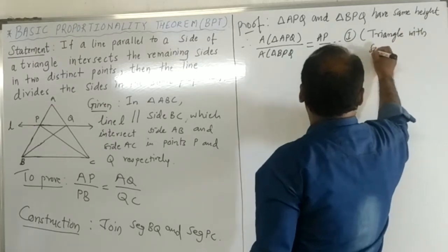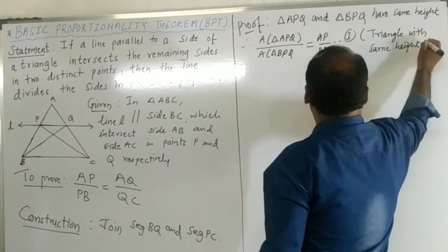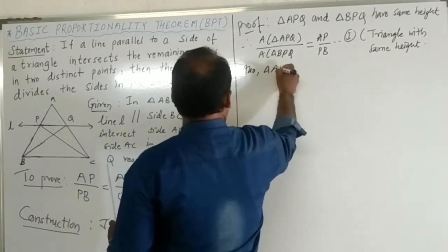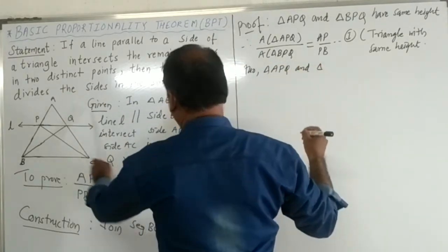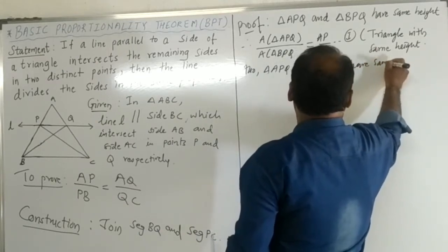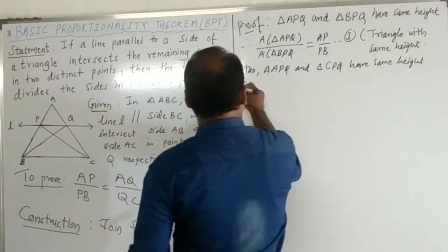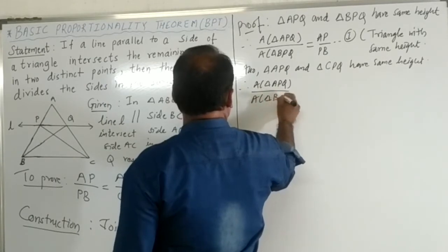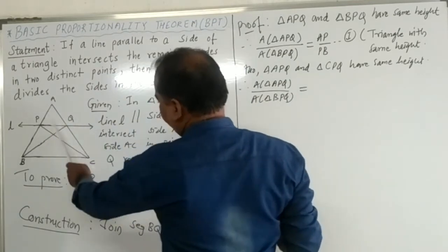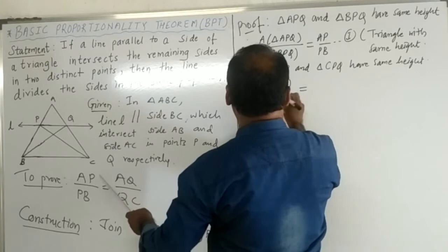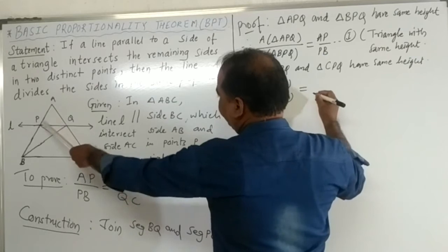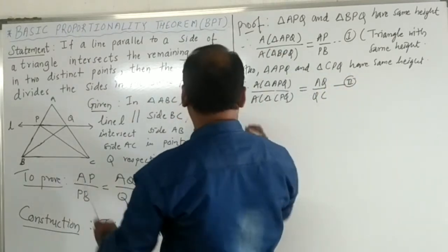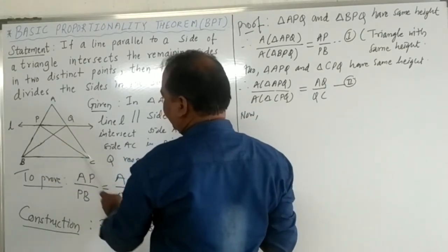Triangles with the same height have areas proportional to their corresponding bases. Now, triangle APQ and triangle CPQ also have the same height. Therefore, the area of triangle APQ upon the area of triangle CPQ is equal to AQ upon QC. This is statement number two.